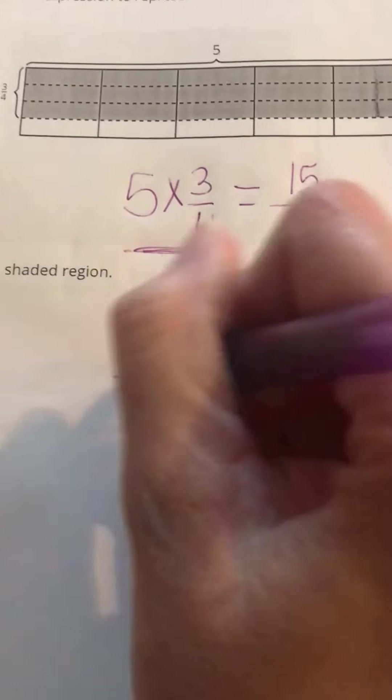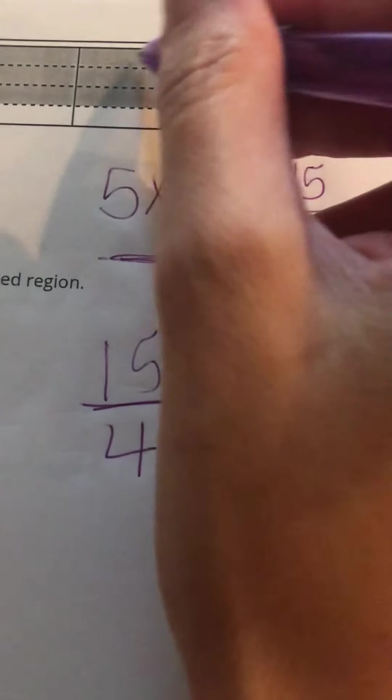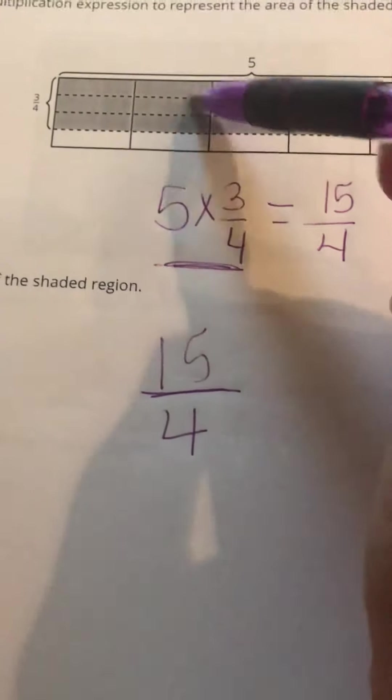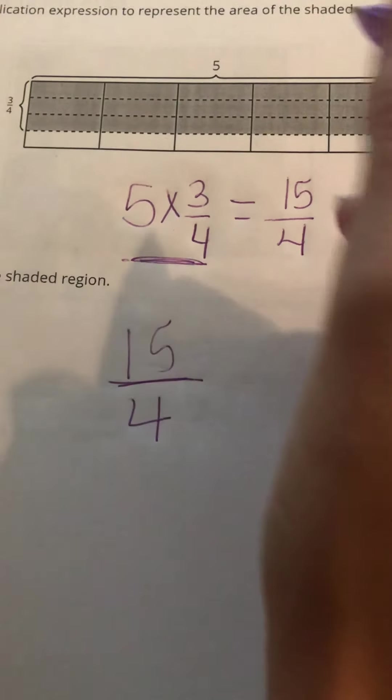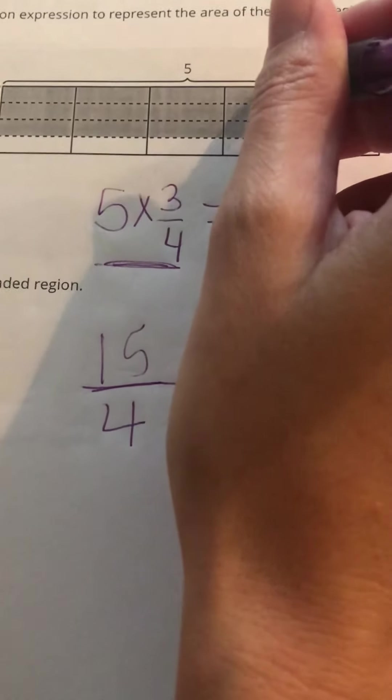So 15/4. If I wanted to use the picture to do that, I could count and I do have 15 of these 1/4 pieces. Now I could take one from here to fill this one in. If I took this one, that would fill in this one.